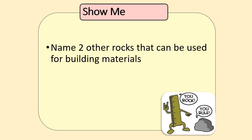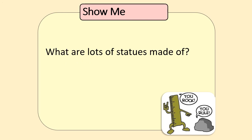We have two other rocks that can be used for building materials: granite, which can be used to make castles, and slate which can be used for making roof tiles. And finally, what is the rock that lots of statues can be made of? That one is marble. And that brings us to the end of this video.